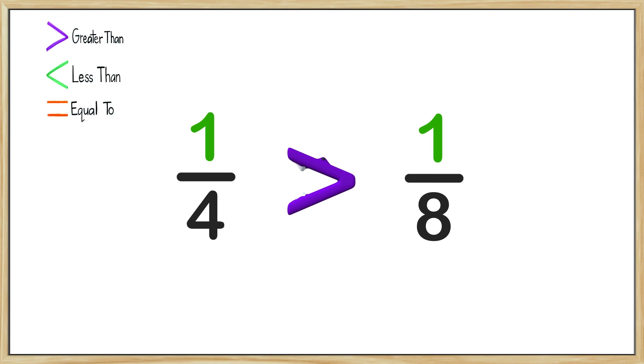That is kind of tough to follow, but let me explain. The denominator with the smaller number means it is divided into less pieces. This one has been divided into four pieces while this one has been divided into eight. The numerators are both one, so that means the circle with the lower denominator is bigger.